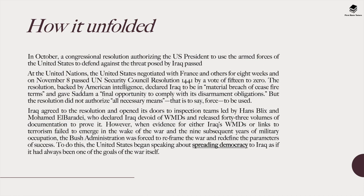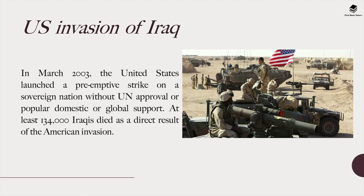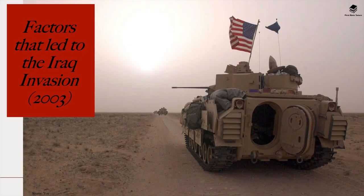The US began speaking about spreading democracy to Iraq as if that had been an original goal of the war. In March 2003, the US launched a pre-emptive strike on a sovereign nation without any UN approval or popular domestic or global support — a war that was very unpopular both in the US and internationally. At least 134,000 Iraqi people died as a direct result of this American invasion.